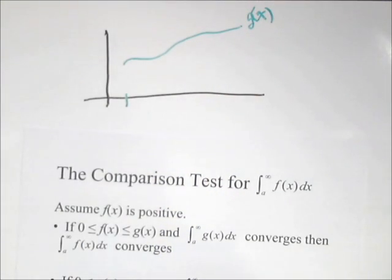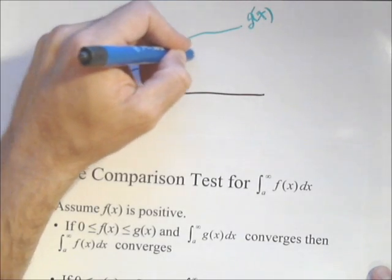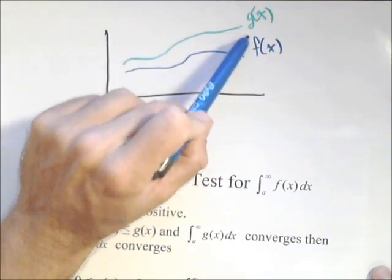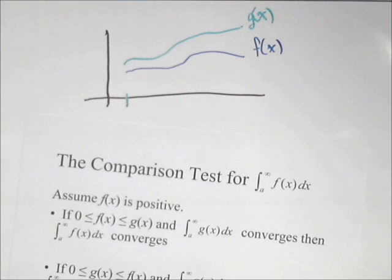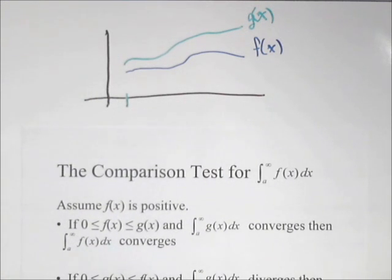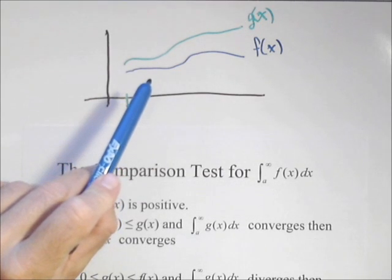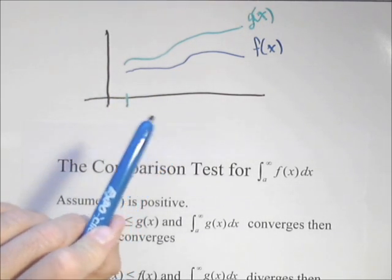Now if we can prove that it is always greater than f(x), then if g(x) converges, then f(x) must converge. To make sense of this, think of it in terms of area. If we can calculate the area underneath g(x), and f(x) is smaller, then we can definitely calculate the area under f(x).